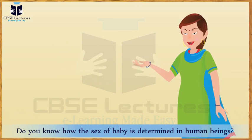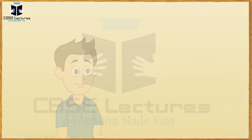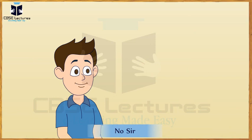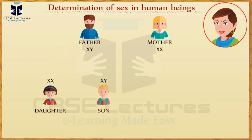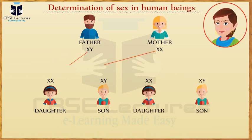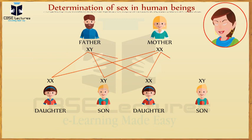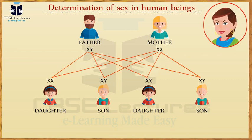Do you know how the sex of a baby is determined in a human being? The somatic cell in human beings has 23 pairs of chromosomes and one pair of sex chromosomes. After gamete formation, each gamete has 23 chromosomes. Thus, a sperm can have either an X or a Y chromosome as the 23rd chromosome.